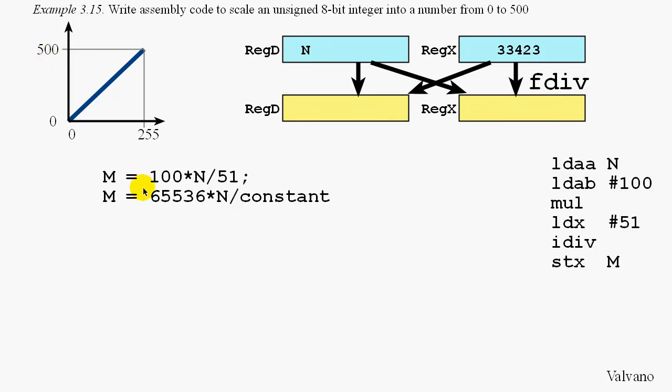In general, we can use the f-divide instruction to convert one number into another if that conversion constant is greater than 1. In that case, it is, because 100 divided by 51 is larger than 1. And we solve for a constant using the following relationship. When we execute the f-divide instruction, we perform this operation, where 65535 is first multiplied times the input and then divided by this constant.